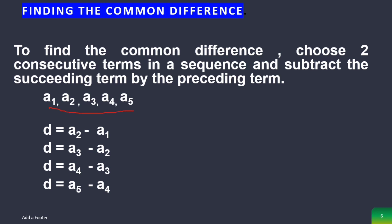To elaborate further, if you have terms denoted by a sub 1, a sub 2, a sub 3, a sub 4, and a sub 5, we can choose two consecutive terms and subtract the succeeding term by the preceding term. For example, pairing a sub 2 and a sub 3 gives a sub 3 minus a sub 2; pairing a sub 3 and a sub 4 gives a sub 4 minus a sub 3; and pairing a sub 4 and a sub 5 gives a sub 5 minus a sub 4.